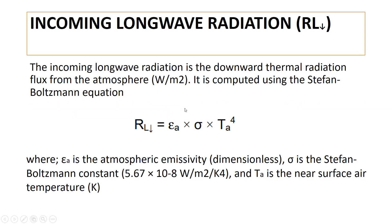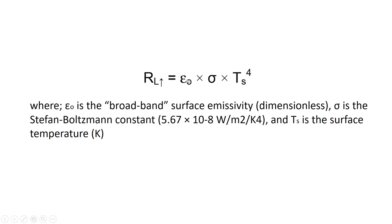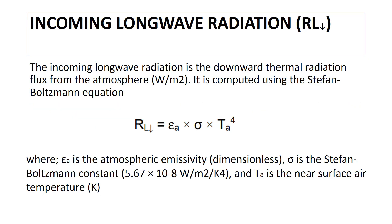Incoming longwave radiation is the downward thermal radiation flux from the atmosphere, computed using the Stefan-Boltzmann equation in a similar form. The key difference is that it uses atmospheric emissivity (dimensionless), computed differently from surface emissivities, and the temperature used is the near-surface air temperature, which will be set equal to the temperature of a cold anchor pixel.